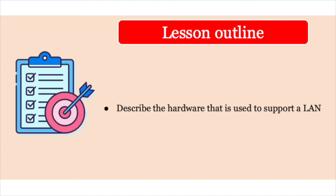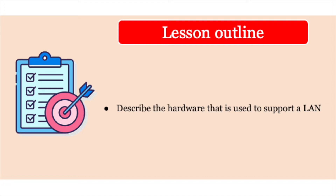The first device we're going to be looking at is the hub. You're going to be familiar with this particular device from IGCSE. A hub is just a hardware device that connects a lot of different types of devices together. It can be both wired or wireless. The biggest problem that a hub has is it's not very intelligent, so when it receives a data packet, it just simply transmits it to everyone that's connected to it. Now this can lead to significant security issues.